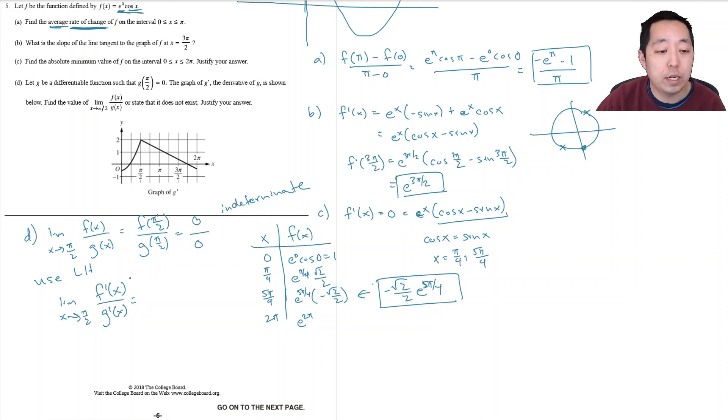f prime, when I plugged in pi over 2, if I look at my derivative here, when I plug in pi over 2, I get e to the pi over 2, cosine of pi over 2, cosine of pi over 2 is 0, minus sine of pi over 2, which is 1.